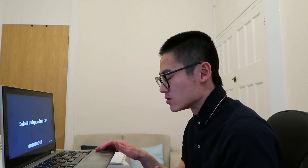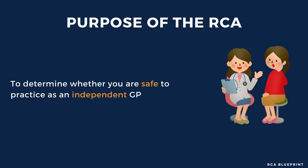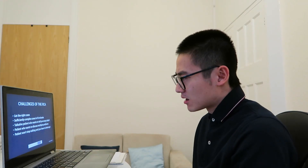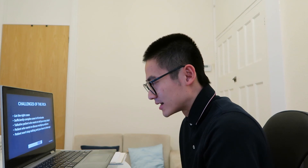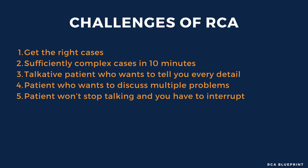Ultimately, examiners are looking for somebody who can work and practice as a safe and independent GP. You need to give cases that demonstrate your capabilities as a safe and independent GP. There are a lot of challenges with the RCA — first of all, getting the right cases is half of the battle. If you can't get the right case, it's very difficult to show these skills and capabilities. That's why it's important to discuss with your practice and get them on board to help support you.